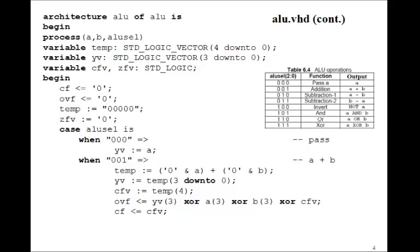Here's the architecture for the ALU. We'll have a process with A, B, and ALU select in the sensitivity list. We'll define variables: a 5-bit temp used for addition and subtraction, and a Y variable, carry flag variable, and 0 flag variable. We'll initialize the carry flag and overflow flag to 0, temp to 0, 0 flag variable to 0.